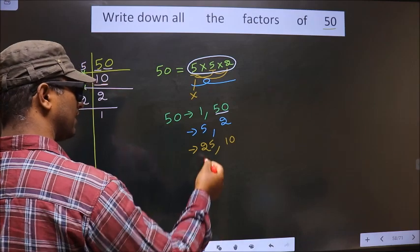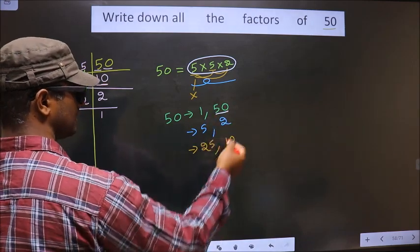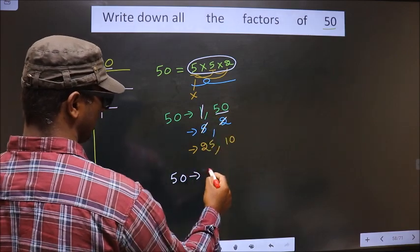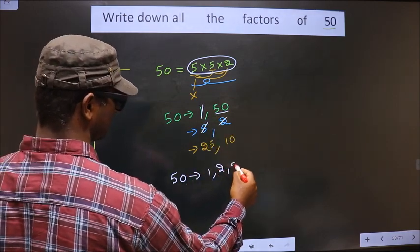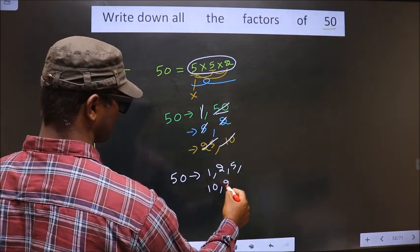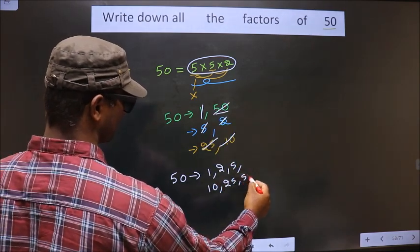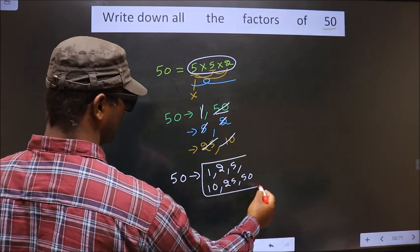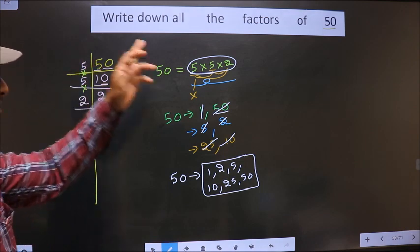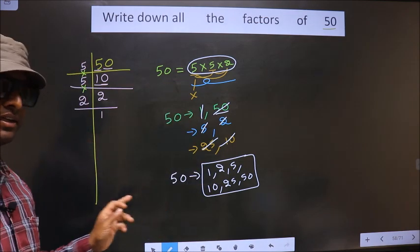So, all the factors of 50 are these numbers. That is 1, 2, 5, 10, 25, 50. So, these are all the factors of 50. Am I clear?